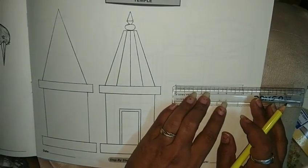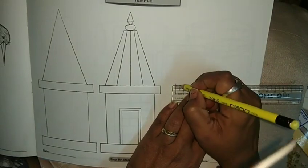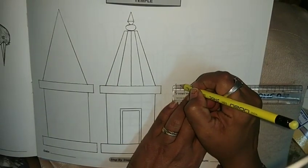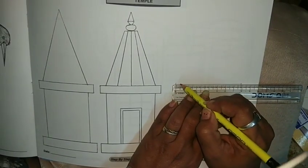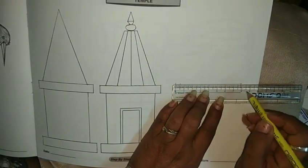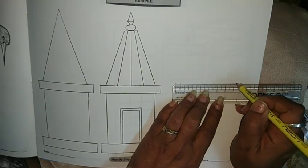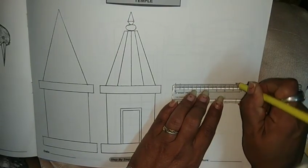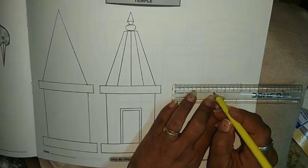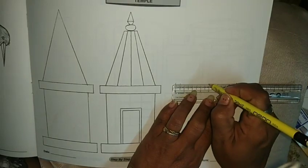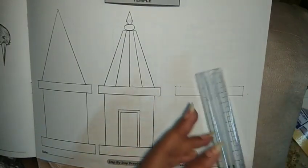Now here we have 8 centimeters. I will leave half centimeter and place one dot here, and this side also I will leave half centimeter and place one dot here. As we know 8 centimeters, the middle center point is 4 centimeters, so I will place one dot at 4 centimeters.